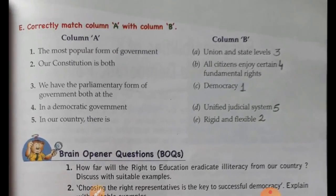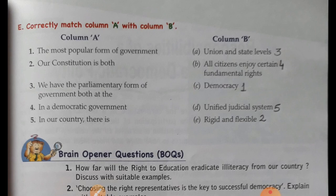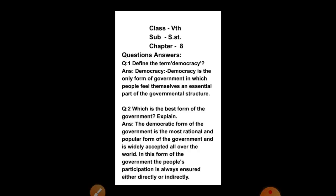Now come on — match the following. You can write down the numbers in the way I have written. First: the most popular form of government — democracy. A constitution is both rigid and flexible. We have the parliamentary form of government both at the union and state levels. In a democratic government, all citizens enjoy certain fundamental rights. In our country there is a unified judicial system. Now come on to question answers of the 8th chapter.